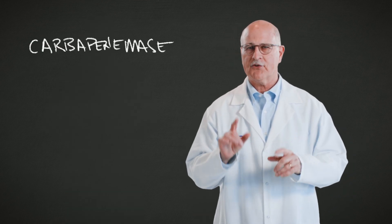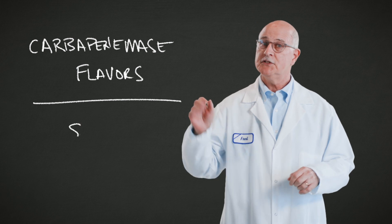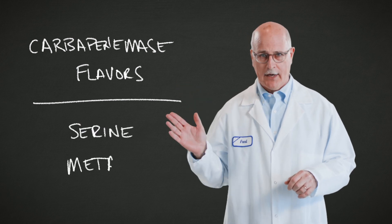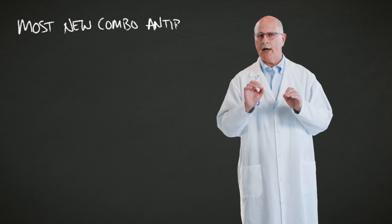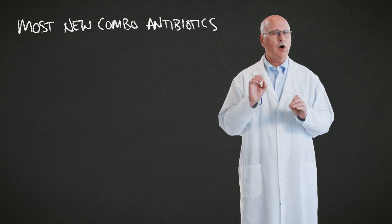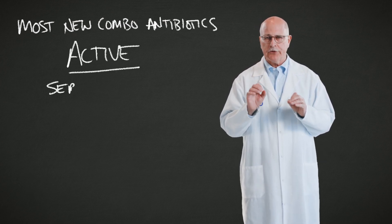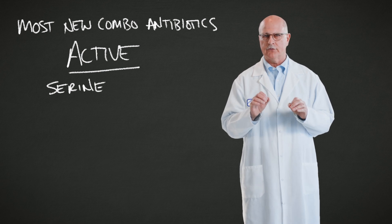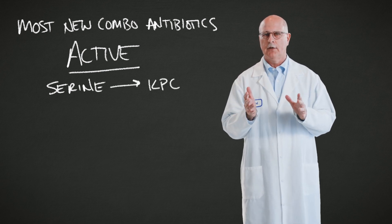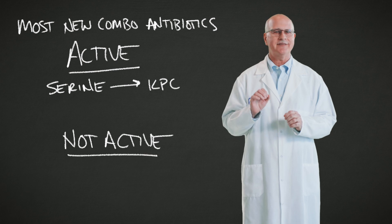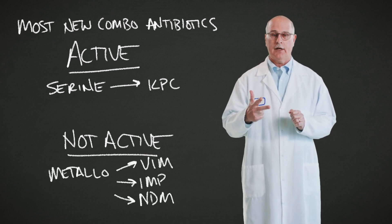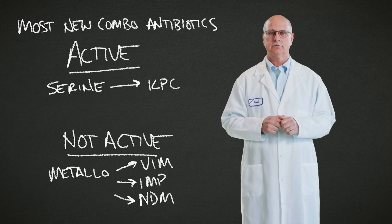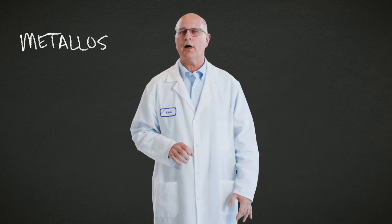So here's the key. The carbapenemases come in two flavors: serines and metalloses. Most of the new combination antibiotic drugs are only active against the serine flavor of the carbapenemases, just like KPC. They are not active against any of the metalloses — that is the VIMs, the IMPs, or the NDMs.